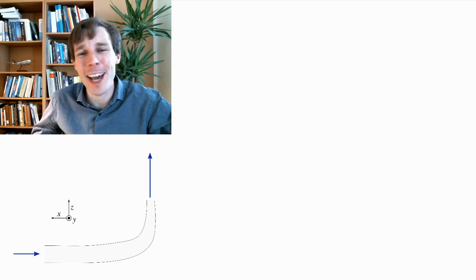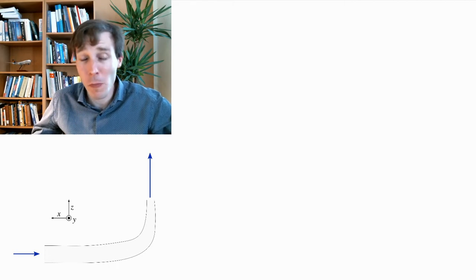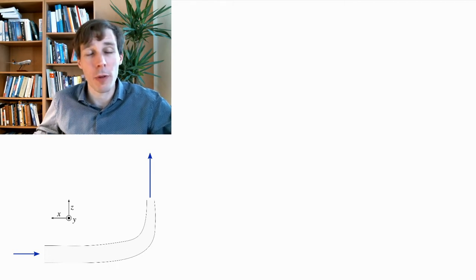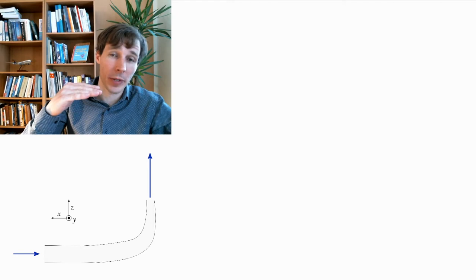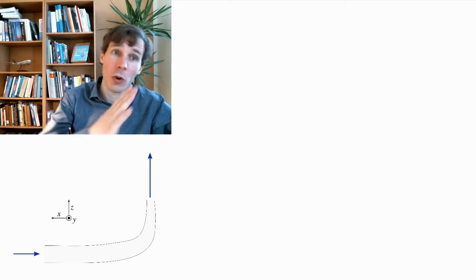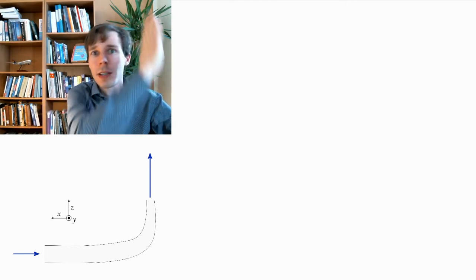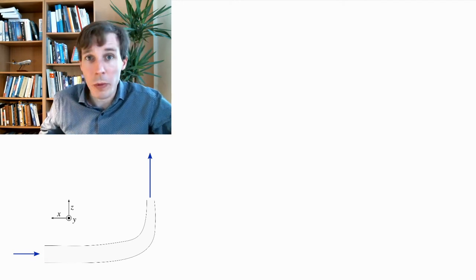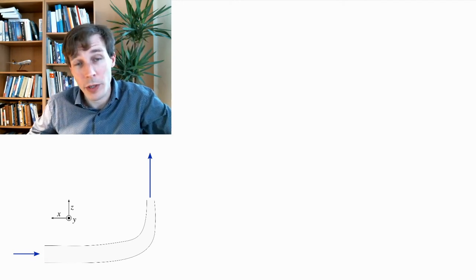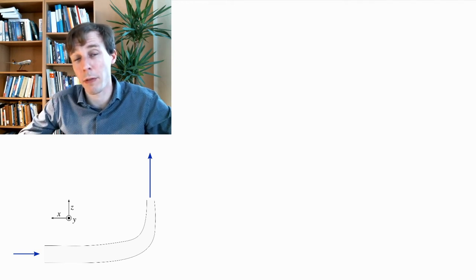In this problem, we're looking at the flow of a chemical. We have 200 kilograms per second of a chemical flowing through a pipe. The flow comes in horizontally at 2 meters per second, and then it swerves upwards through the bend of the pipe and exits vertically at 3 meters per second. What we're looking for is the net force applying on the fluid as it transits through the pipe.